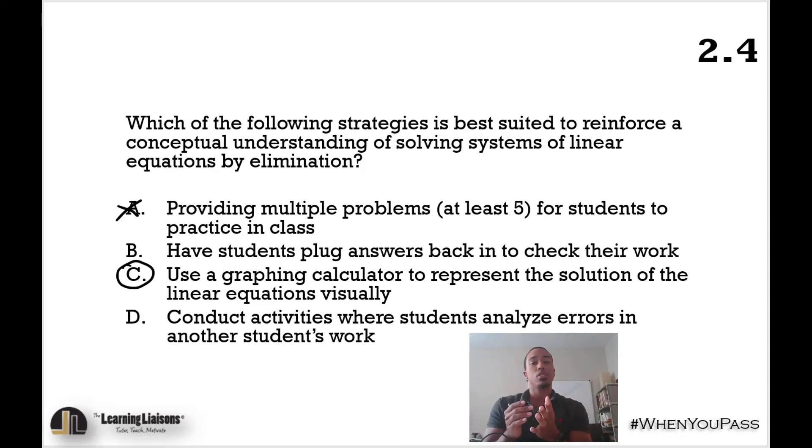When we think about systems of equations, that's broken down into three main subcategories. We can solve systems by graphing, by elimination, and by substitution. Knowing the relationship between all three of these, knowing that a system of equation, when it's solved, is basically a coordinate on the graph relating elimination and substitution to graphing, that's the conceptual understanding that we want to build within our students in this concept. And so that's why B is incorrect and C is correct.